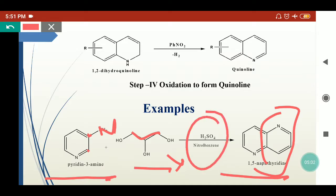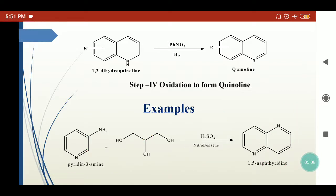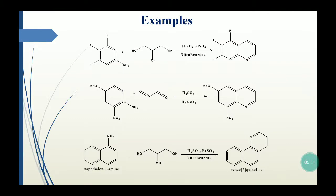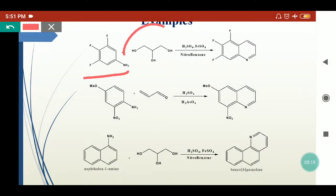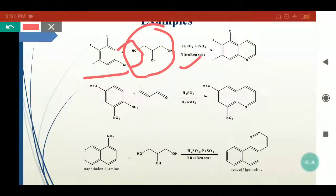Overall, when pyridine-3-amine reacts with glycerol under these conditions it generates the corresponding quinoline. If the primary aromatic amine is substituted with another group — for example a fluorine-substituted aromatic amine treated with glycerol in the presence of sulfuric acid and nitrobenzene — it will generate the corresponding quinoline. The substituent groups remain as they are and do not affect the reaction.